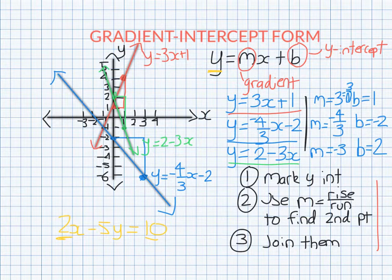If we wanted to graph using gradient intercept form, we need to get y by itself. But an equation like this would be much easier to use the xy-intercept method that we learned a few lessons ago. So it must be y equals to be in this form.